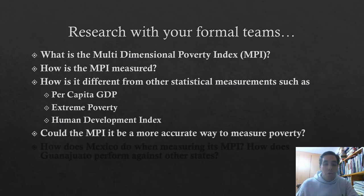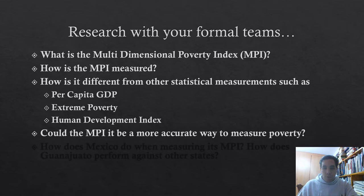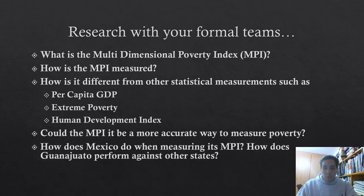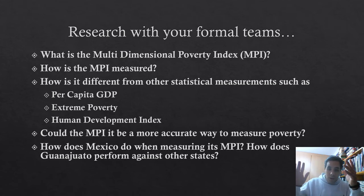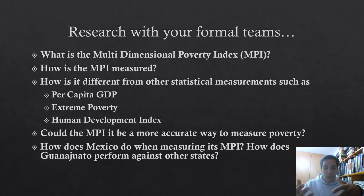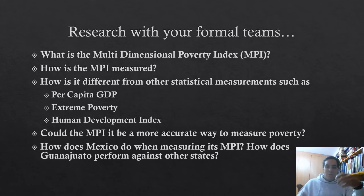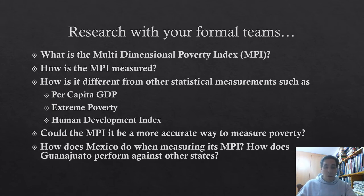Fourth question: could the MPI be a more accurate way to measure poverty than the previous ones mentioned? And the final question — actually two parts: how does Mexico perform when measuring its Multidimensional Poverty Index compared to the world — are we at a good level or a bad standing? Establish a judgment. And second: how does Guanajuato perform against other states when looking at this Multidimensional Poverty Index?